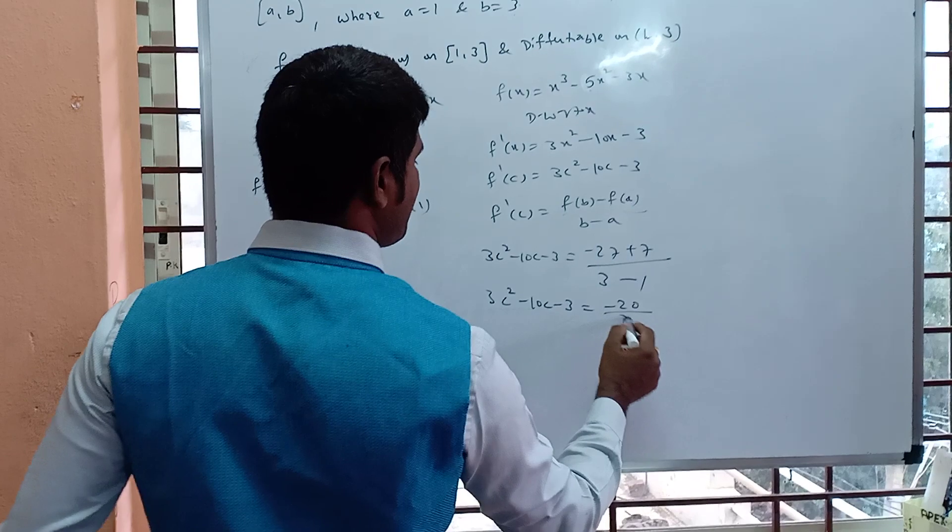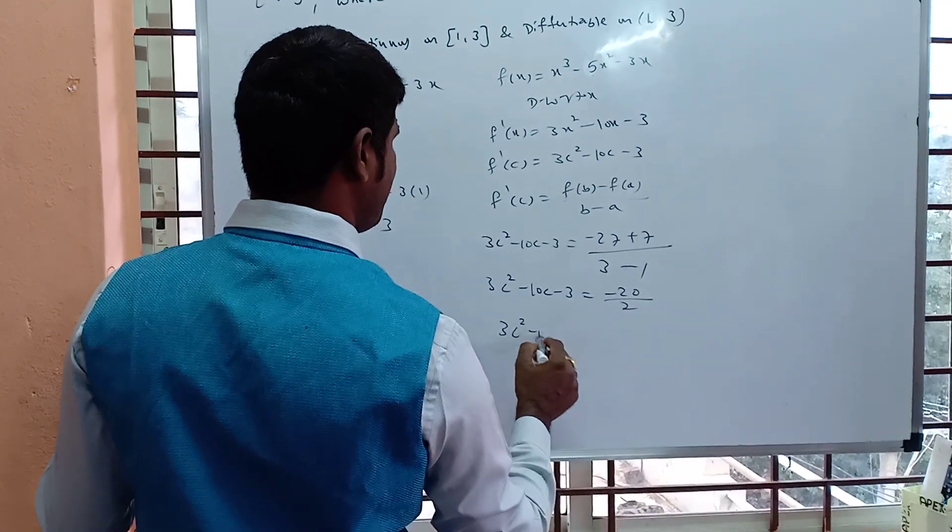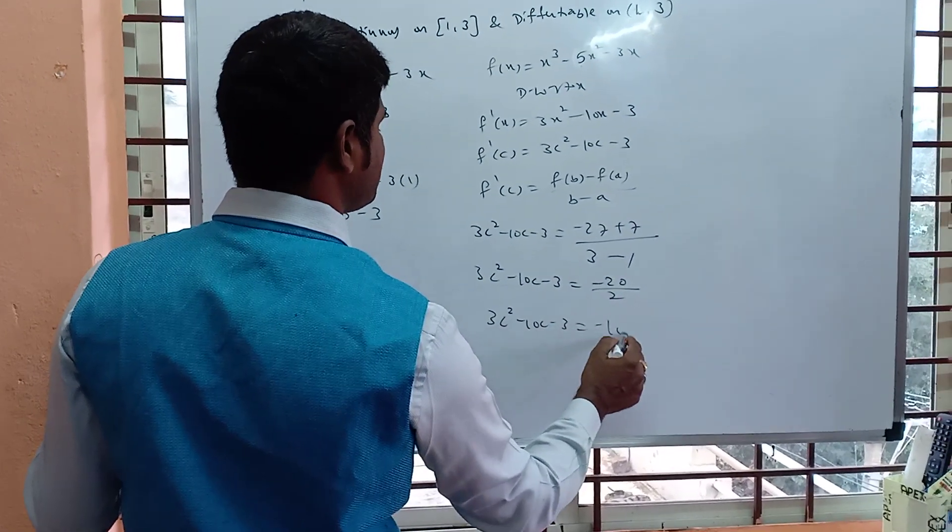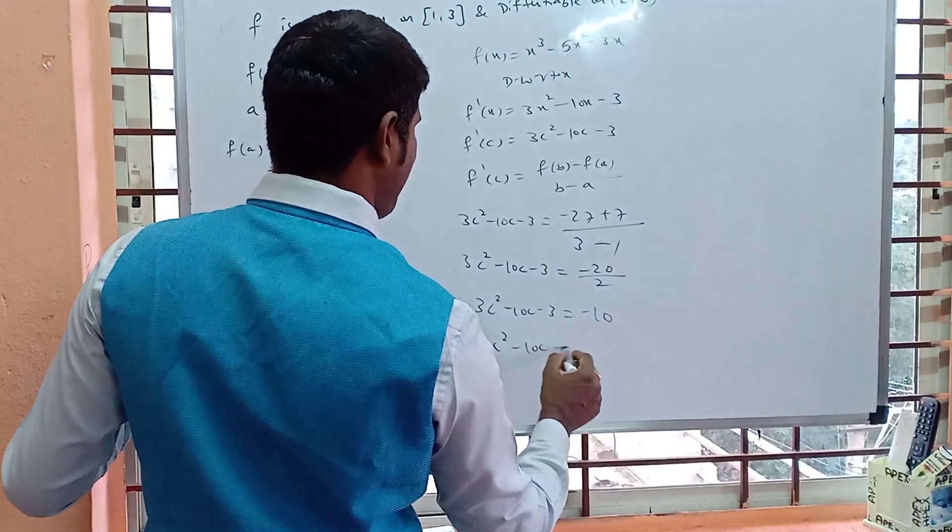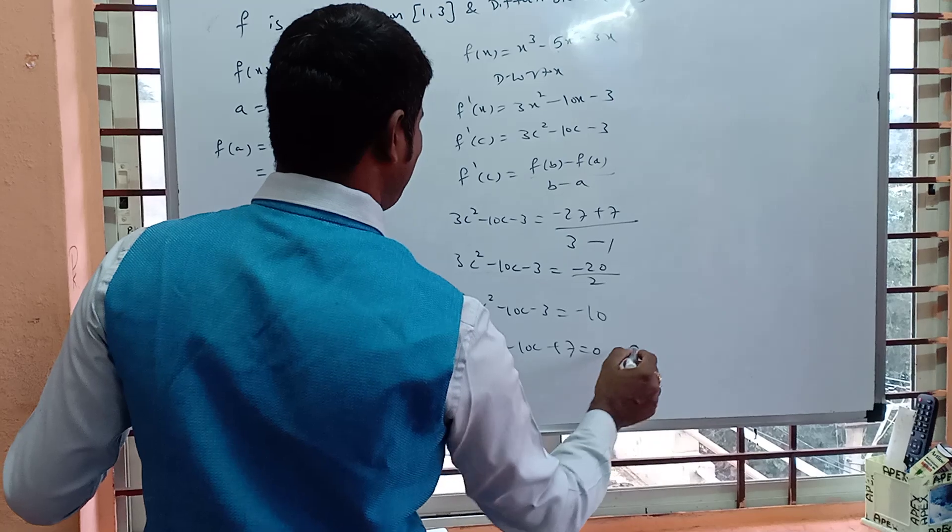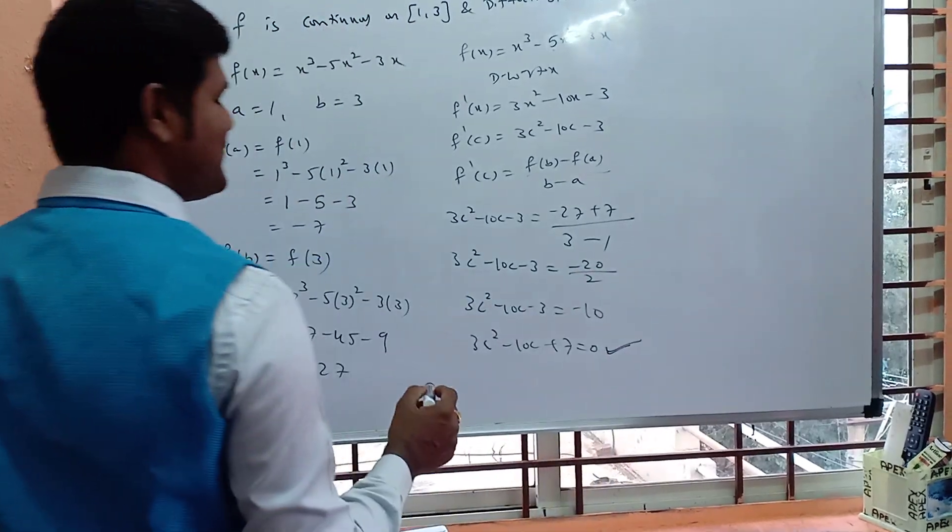3c² - 10c - 3 = -20/2. 3c² - 10c - 3 = -10. Transfer to left hand side: 3c² - 10c + 7 = 0. Now you can solve this equation.